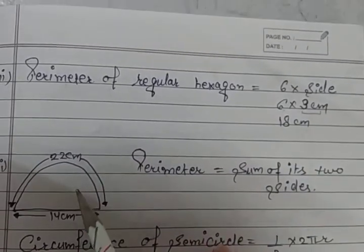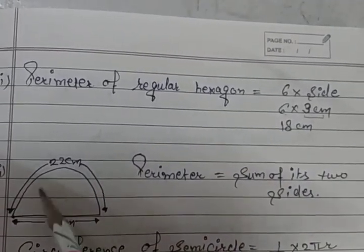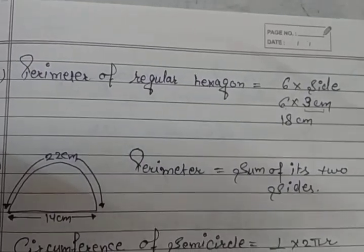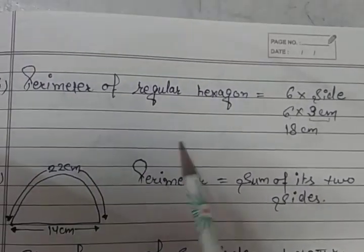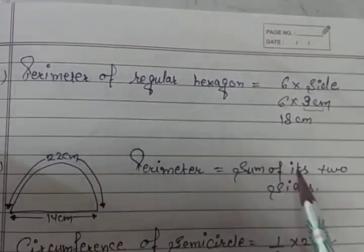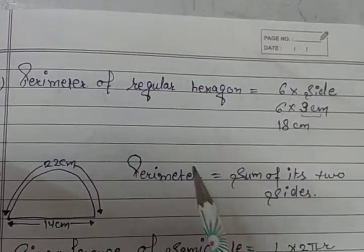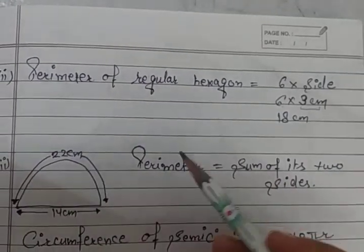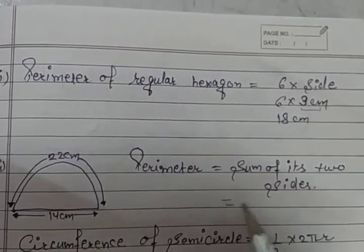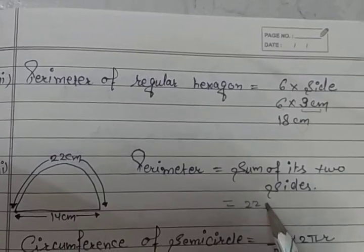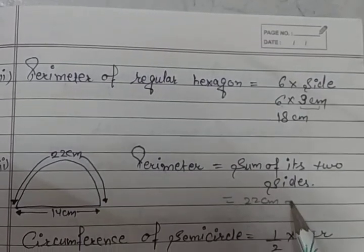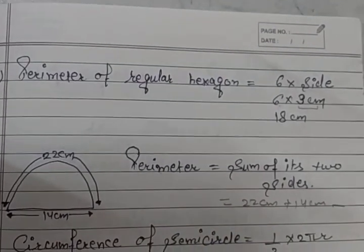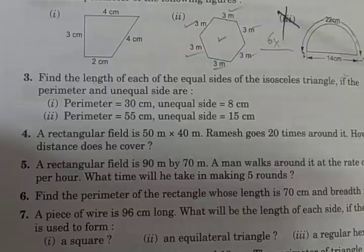After this, in the next question you are having a figure that is a semi-circle. If you want to find the perimeter of this semi-circle, you will put the formula as sum of its sides — simply add the 2 sides: 22 cm and 14 cm. Add them and you will definitely get the answer.